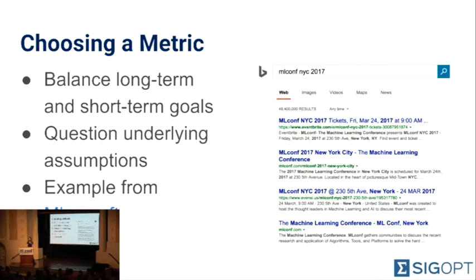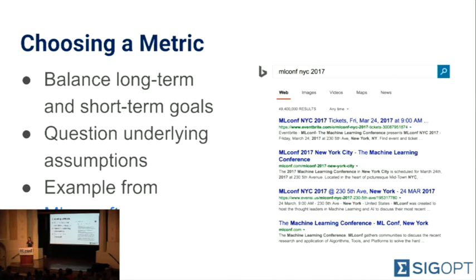So you've chosen your inputs to the optimization process — receiving a set of hyperparameters, evaluating the model, and recording performance. Now it's time to choose an evaluation metric. There's often this notion of needing to balance short-term and long-term business goals: do I measure my model on accuracy, error, or some other value?